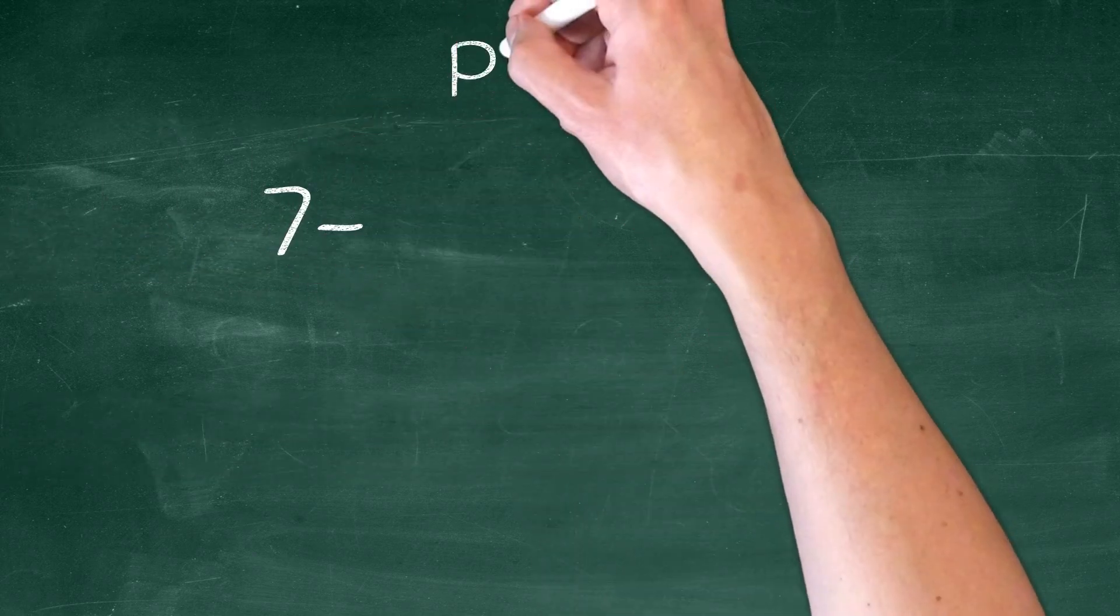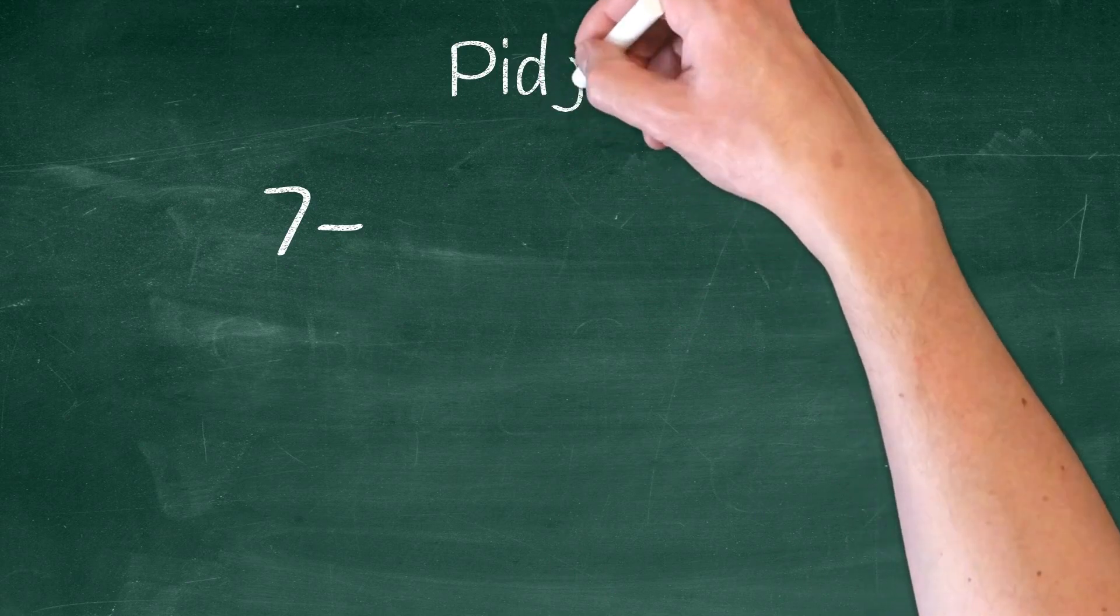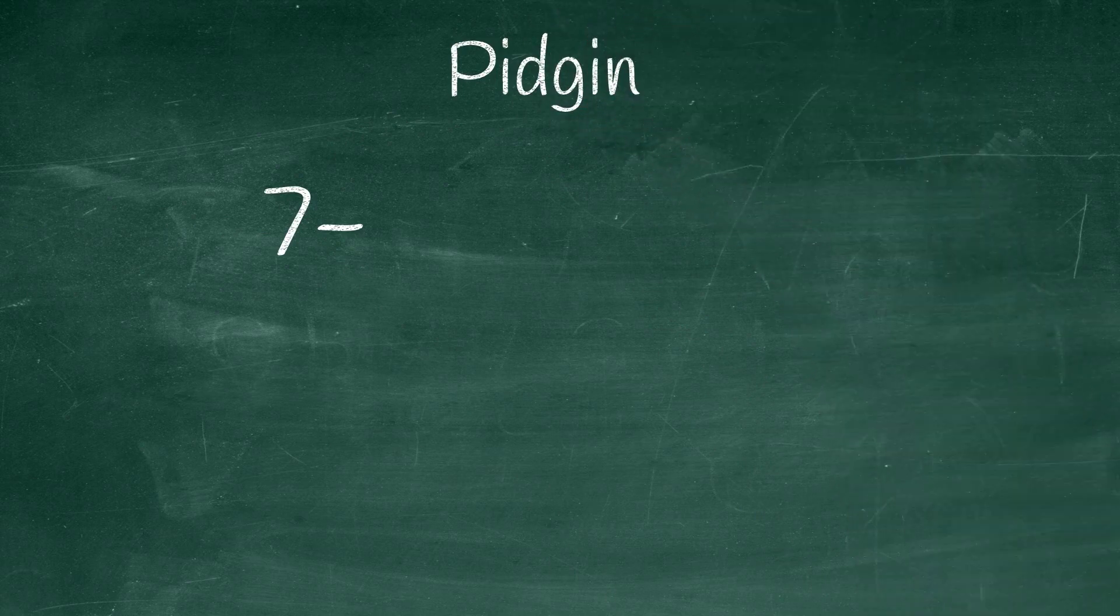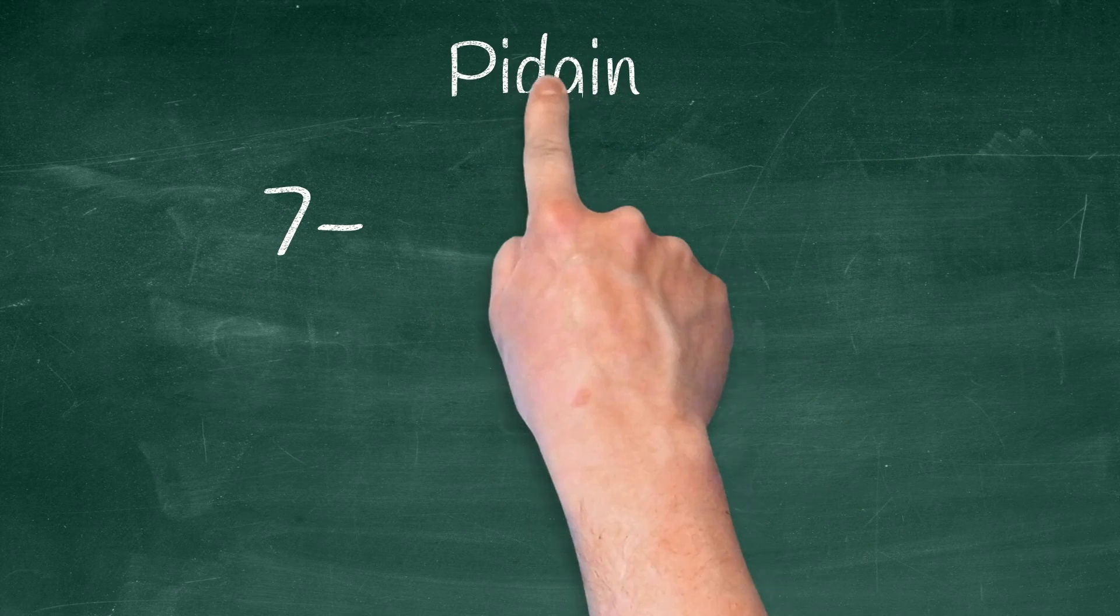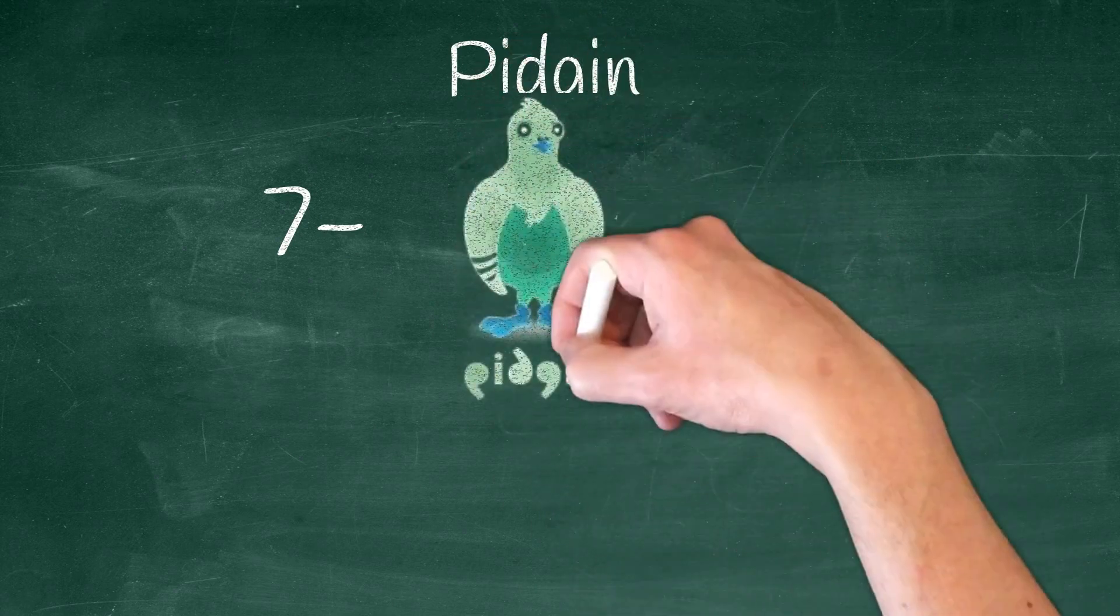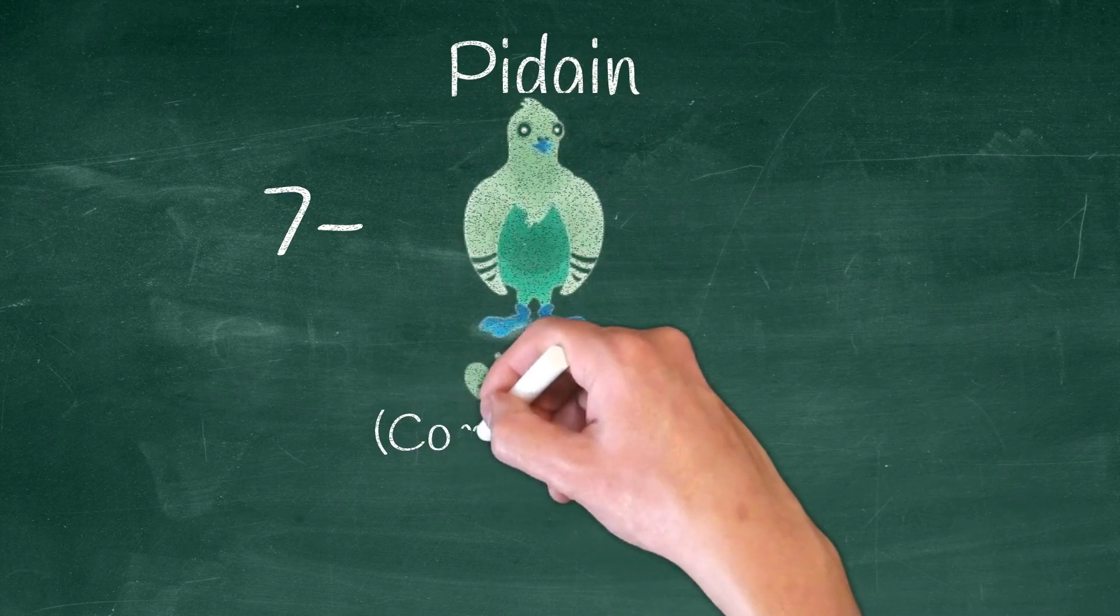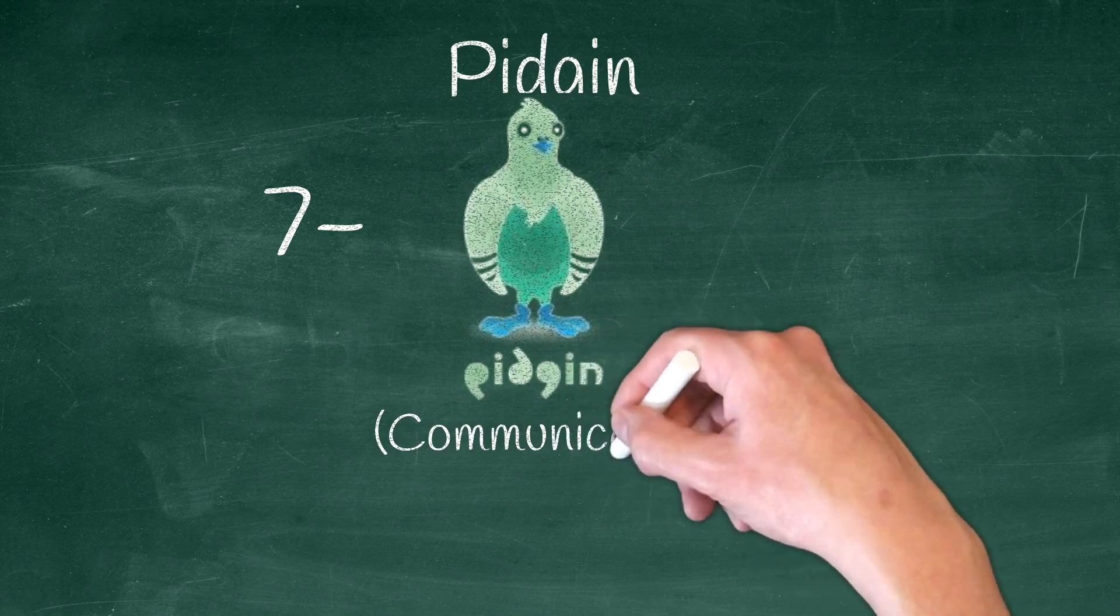Number 7, Pidgin. Pidgin is an open source instant messenger client. It supports many chatting platforms including Google Talk, Yahoo, and even IRC. Pidgin is extensible through third-party plugins that can provide a lot of additional functionalities.